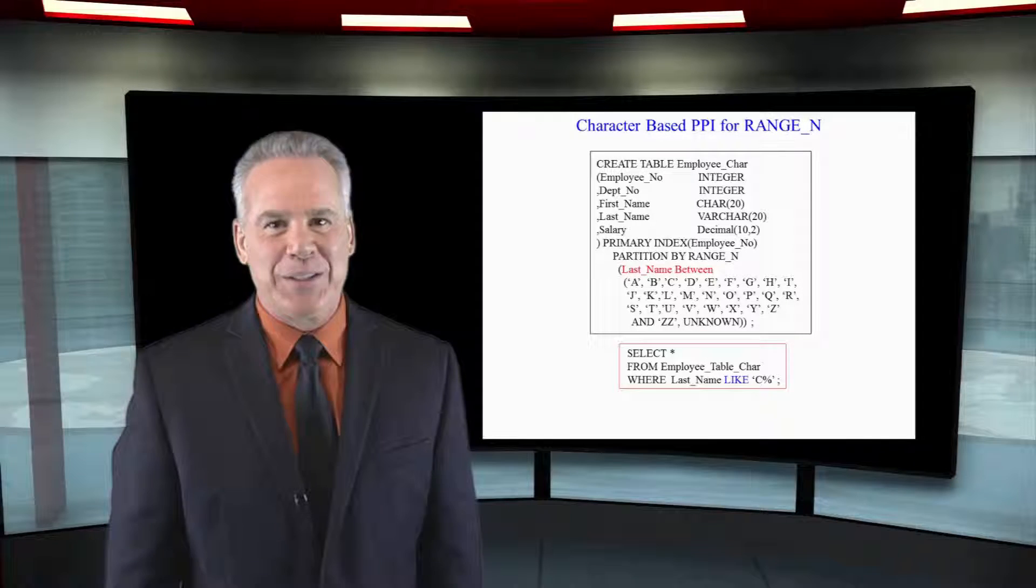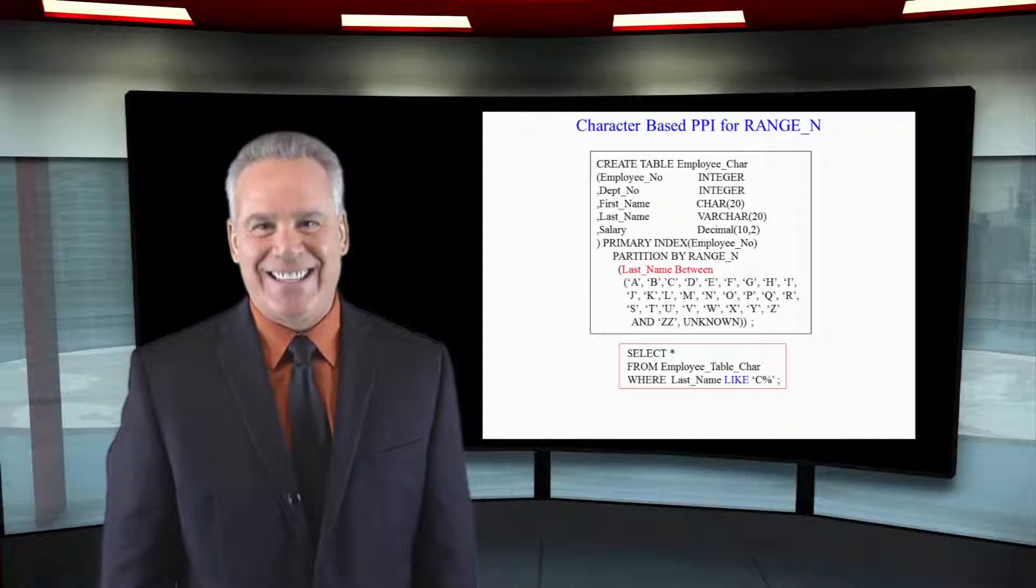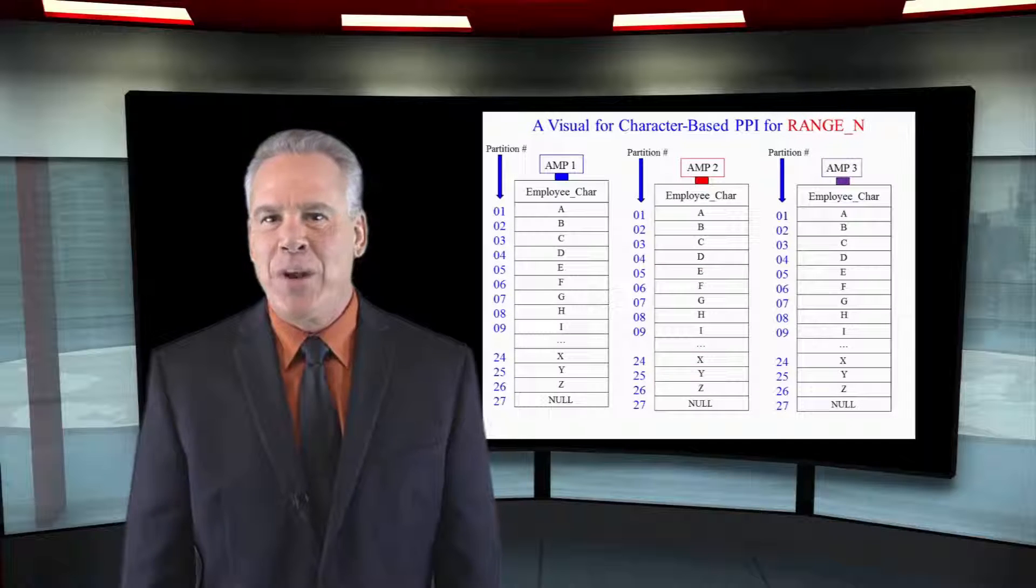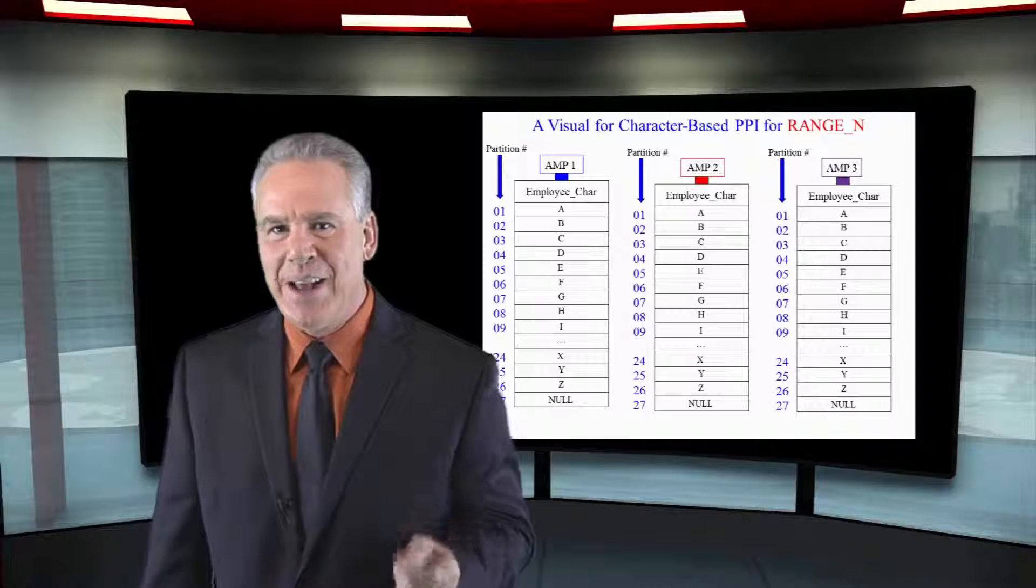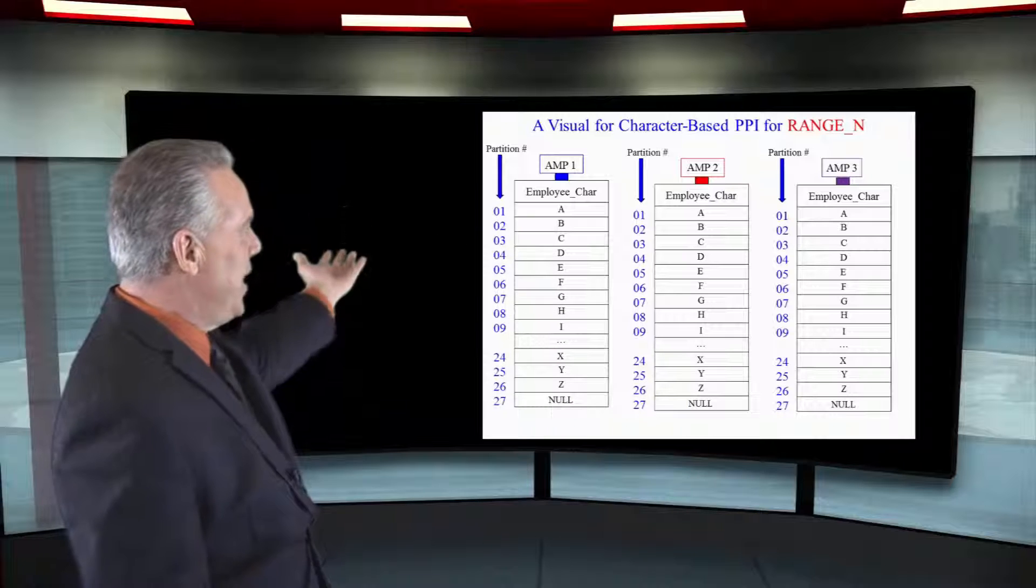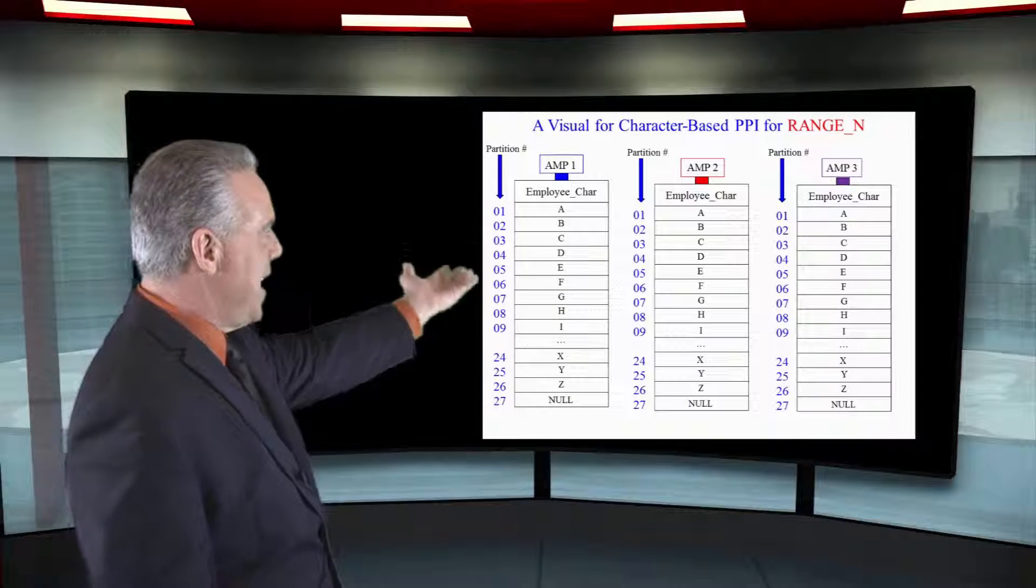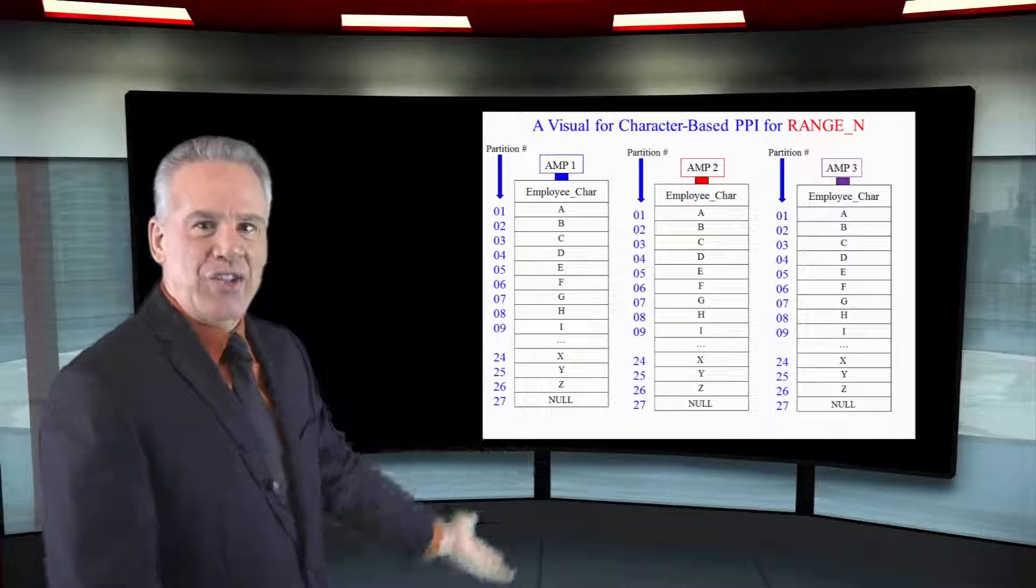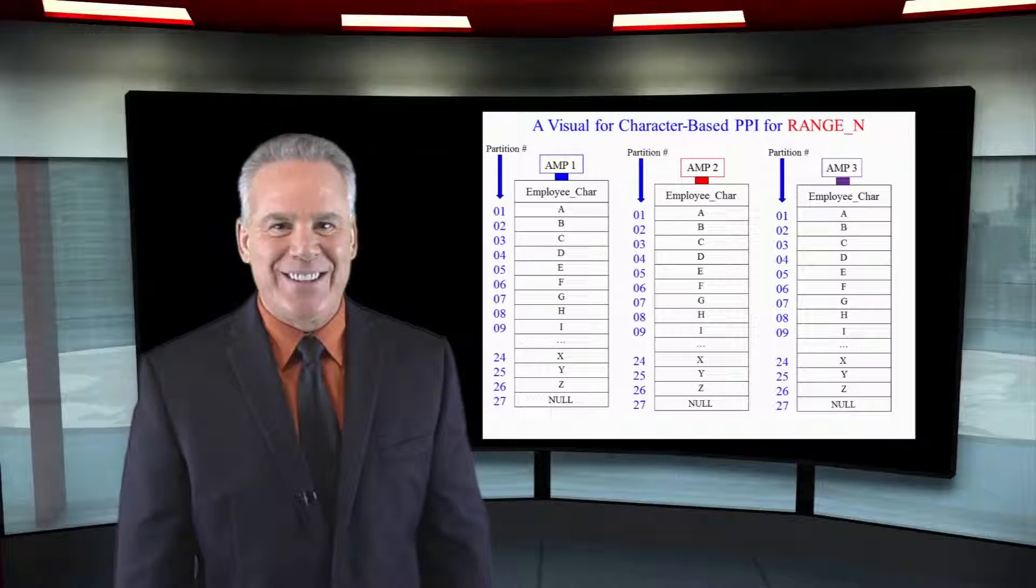We'll take a look at how this partitioning looks in the next slide. We are now partitioning by A's, B's, C's, and you can see as the last names are sorted on each AMP, that's the way it's going to lay out.